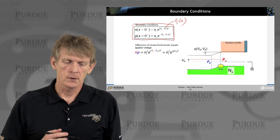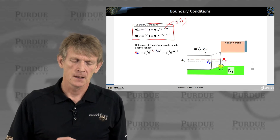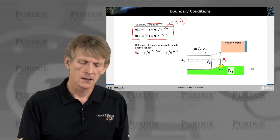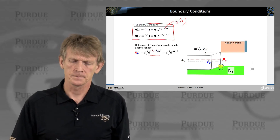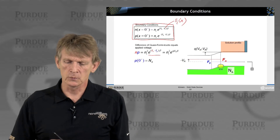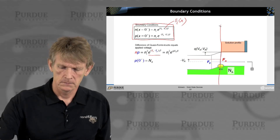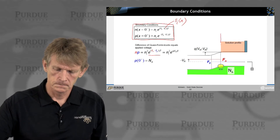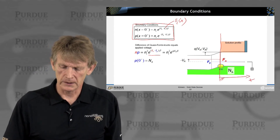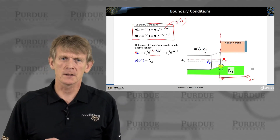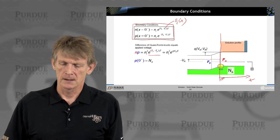We had calculated this injection before, so let me go through the steps. As a reminder, N times P is not just n_i squared anymore, but it has an exponential where the difference of the two quasi Fermi levels is the applied voltage. Now we can assume that at this point we're going to home in on this edge — we call this position zero-plus — which is the end of the depletion region under this given bias.